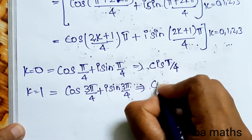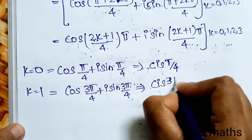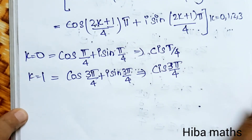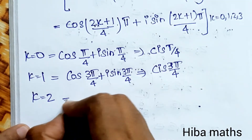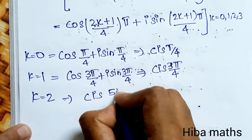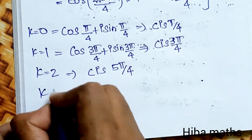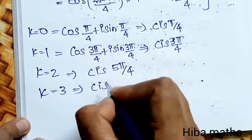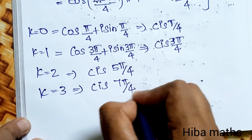When k = 2: (2×2+1) = 5, giving cos(5π/4) + i sin(5π/4). When k = 3: (2×3+1) = 7, giving cos(7π/4) + i sin(7π/4).